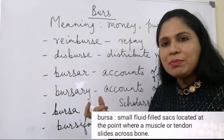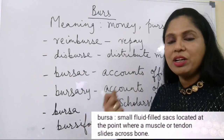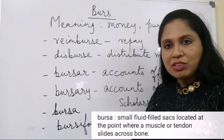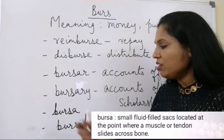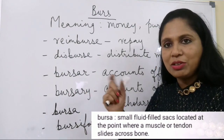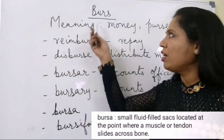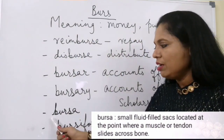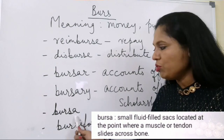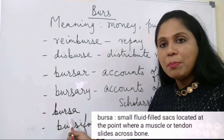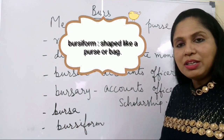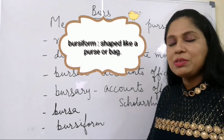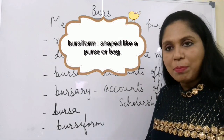Bursa refers to sacs in our muscles connected to the bones — their shape resembles a purse, which is why this word takes the root word burse. Bursiform means like a purse, or something shaped like a purse.